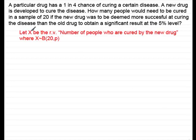What we have here is essentially a binomial model, if we assume that the probability of someone being cured remains constant and probabilities are independent. First I need to define a random variable: let X be the number of people cured by the new drug, where X is distributed binomially with 20 trials and probability P that someone is cured by the new drug.